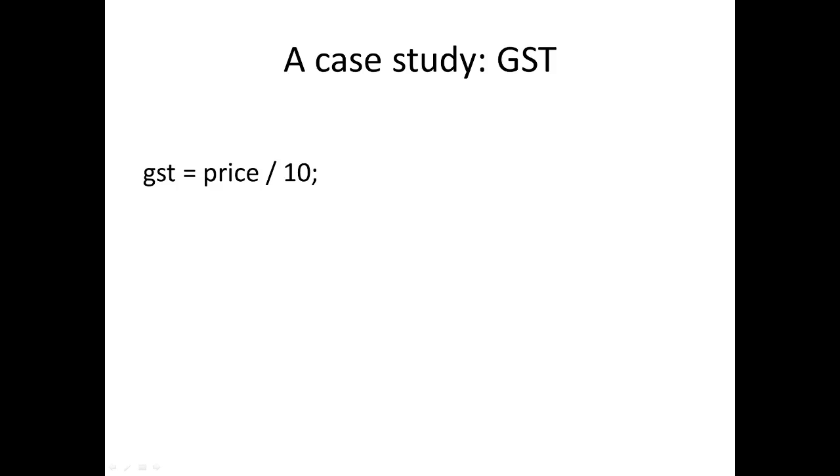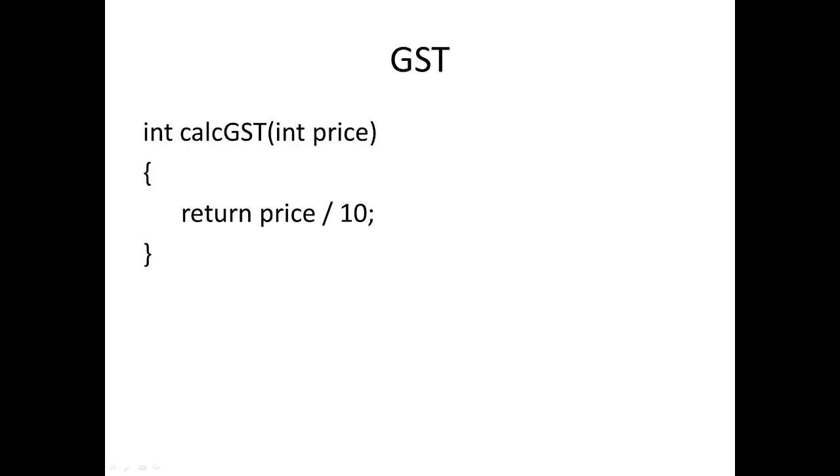So it seems like okay, you could just go around everywhere in the code and just write wherever you want to know what the GST is, you just divide the price by ten. But what we really want to do is centralize how GST is calculated. There's always the chance that GST might go up or somehow the way that GST is calculated changes. So now we've got a function. You pass in a price and it returns the GST, and so you need to go through everywhere in your program you want to know GST, you don't just divide by ten, you call this function.